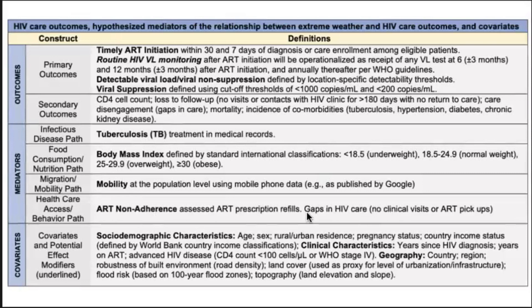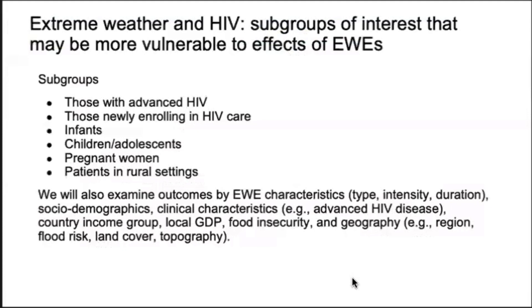The primary outcomes we are focusing on are timely ART initiation after enrollment in care or diagnosis, routine viral load monitoring, detectable viral load, and viral non-suppression. We will also try to get at some of the pathways Sherry alluded to — understanding mediators, moderators, and potential covariates. IDEA's large size enables us to do analyses specific to different subgroups: people with advanced HIV, people newly enrolling in care, infants, children, adolescents, pregnant women, and people who live in rural settings.